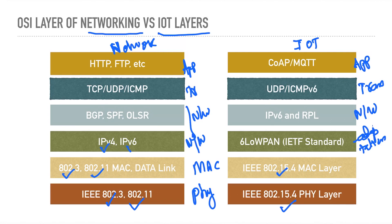In the network layer, standard networking uses IPv4 and IPv6, whereas IoT uses 6LoWPAN as the adaptation layer. Standard routing protocols include BGP, OSPF, and OLSR; in IoT the equivalents are IPv6 and RPL (Routing Protocol for Lossy Networks). For the transport layer, IoT uses UDP and ICMP, whereas standard networking uses TCP, UDP, and ICMP. At the application layer, IoT uses MQTT rather than HTTP and FTP. Both follow the same open standard interconnection model, but IoT is miniaturized, low cost, and small.